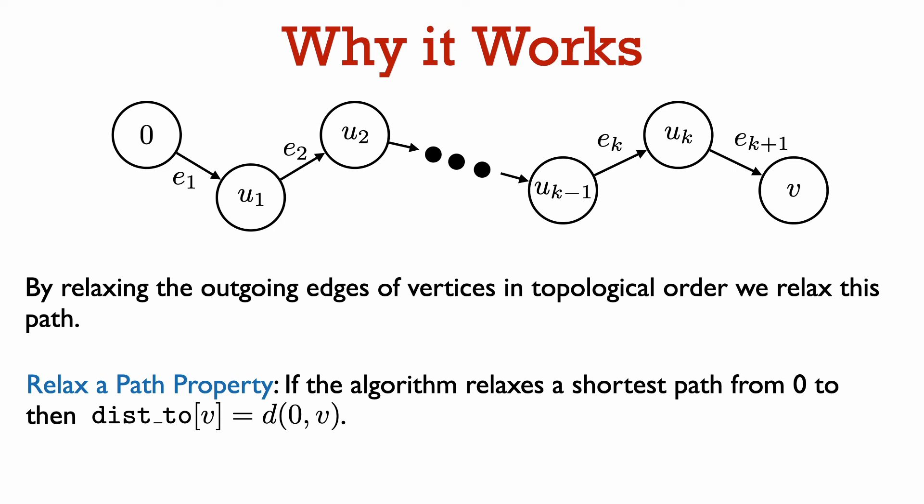And again, by invariant 2 of the generic algorithm, tracing back using the edge2 array will actually give us a shortest path from vertex 0 to vertex v.